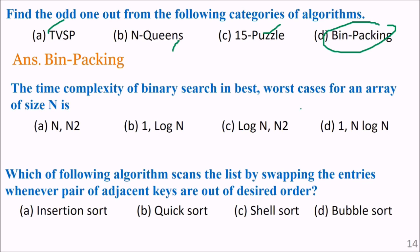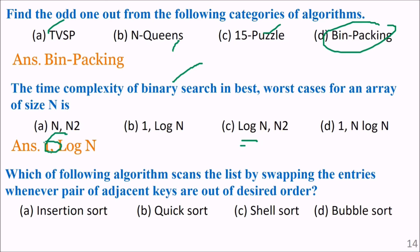The time complexity of binary search: best and worst case for any array of size n. For binary search, the best case is order of 1 — because if you find the value at the middle position immediately, you are done. The worst case is order of log n, where you must keep halving the array.